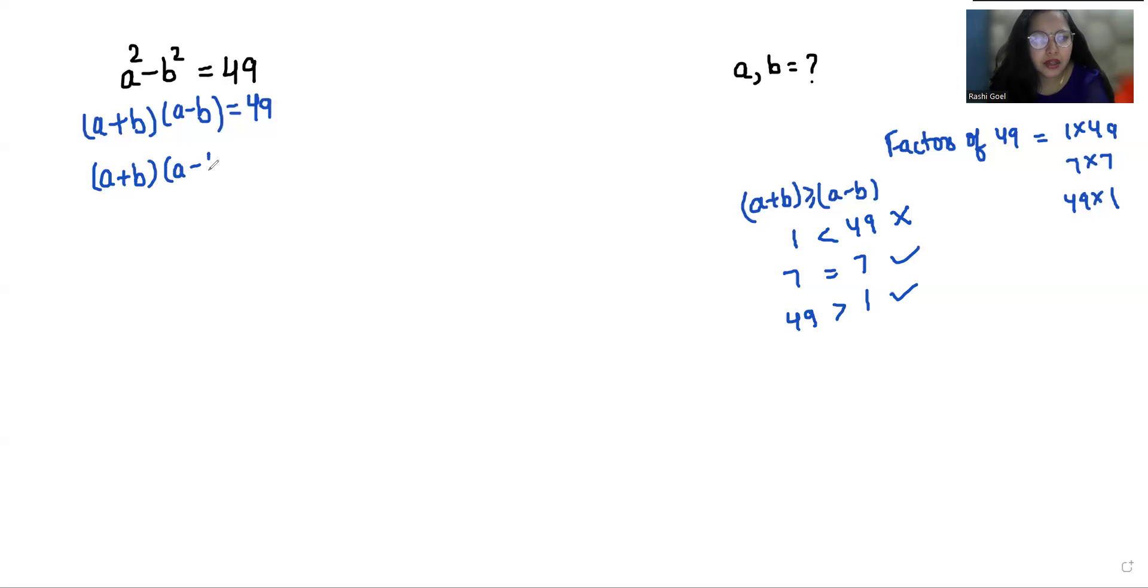First, (a+b)(a-b) = 7×7, so a+b = 7 and a-b = 7. This is equation 1 and equation 2. Now add equations 1 and 2: a+b + a-b = 14.